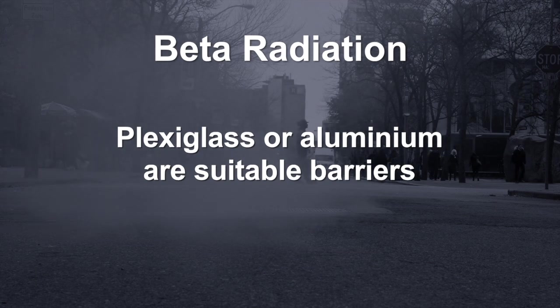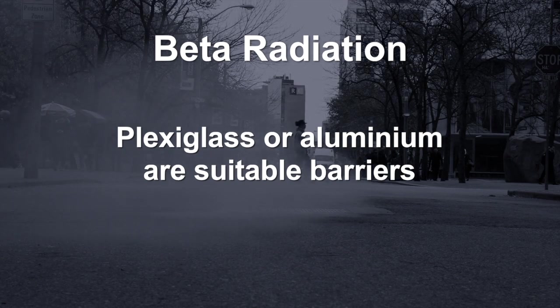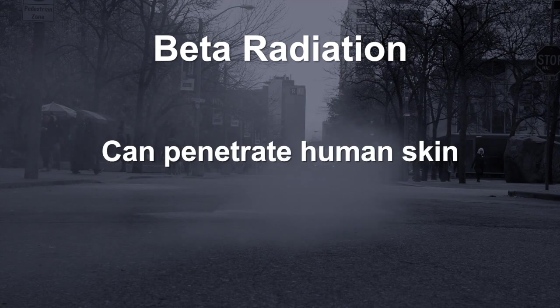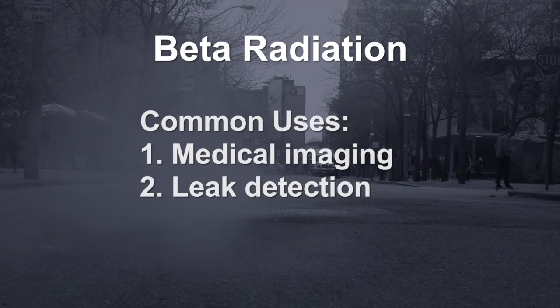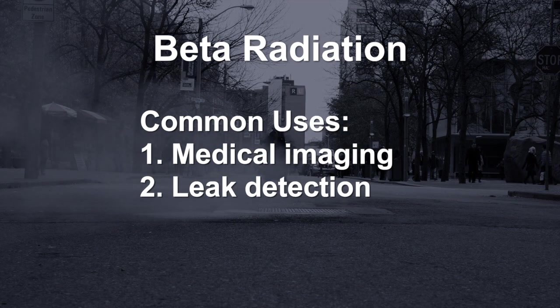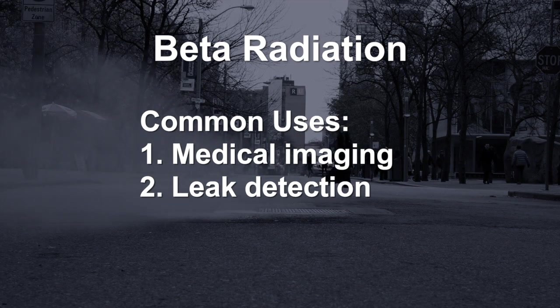Plexiglass or aluminum can be used as a barrier against beta radiation. Beta rays have the ability to penetrate human skin. Some common uses are in medical imaging and leak detection in underground pipes.